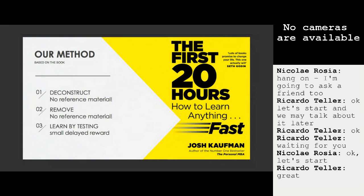We have removed a lot of material, selected only the important part to teach, and then we do learning by testing — we make students practice. Every small part we teach is followed by a practice that makes the robot do something. By doing this, every new concept the student learns is followed by a result on the robot, decreasing the reward delay a lot. The student understands faster what their actions on the code mean and what the consequences are on the robot. We have shortened this delay a great deal.